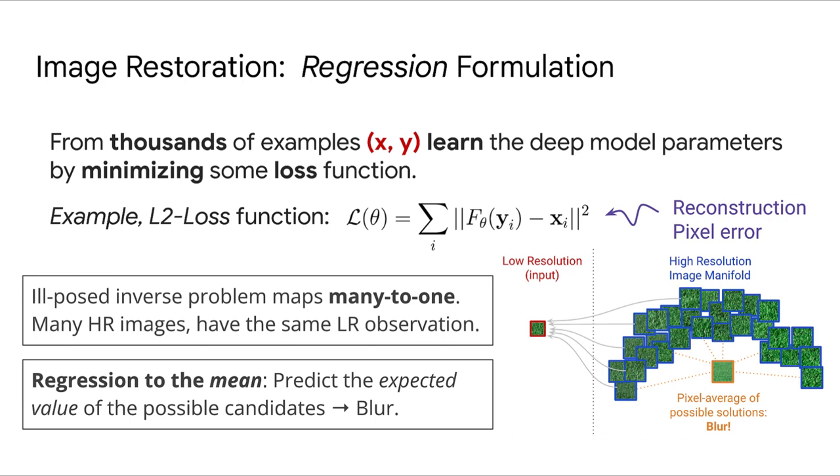If we train a model to directly minimize the reconstruction pixel error, in the best scenario, we will get a model that perfectly predicts the average of all plausible reconstructions. This image will look blurry since it is the average of many high quality images. This effect is known as regression to the mean.